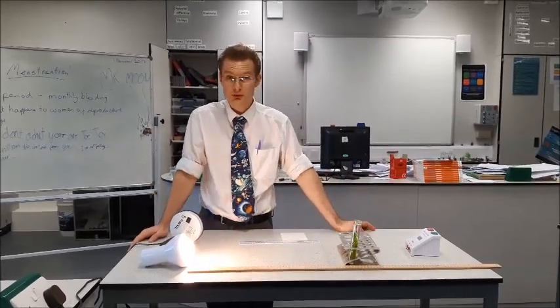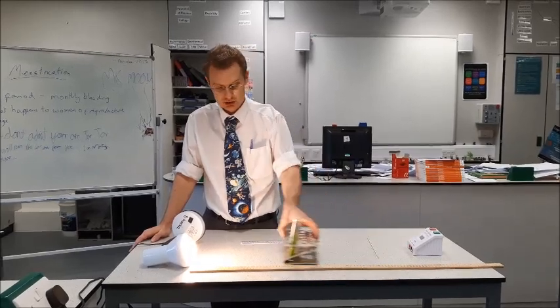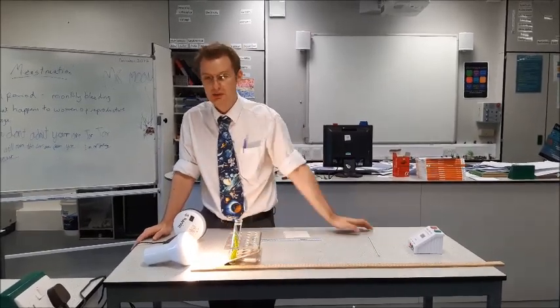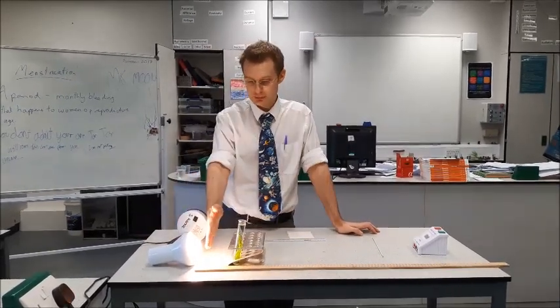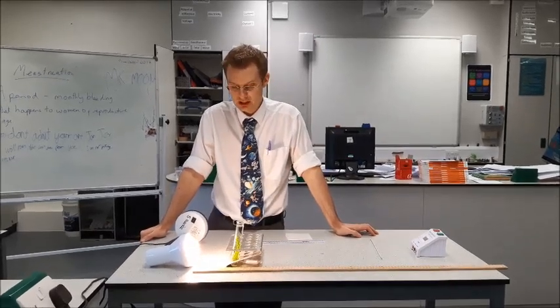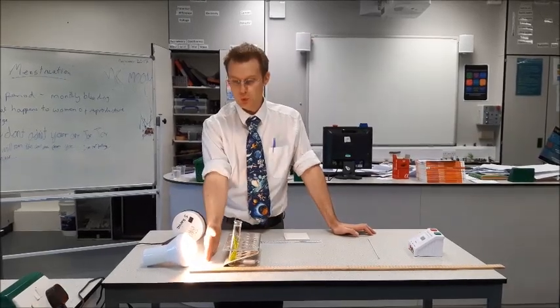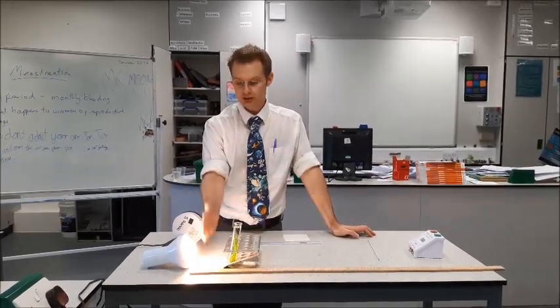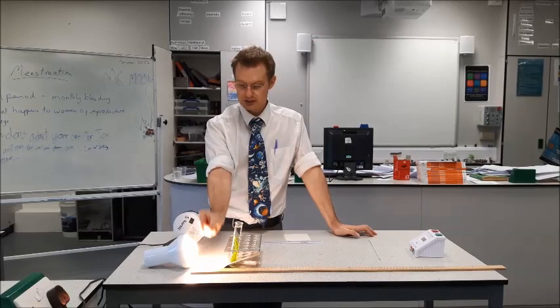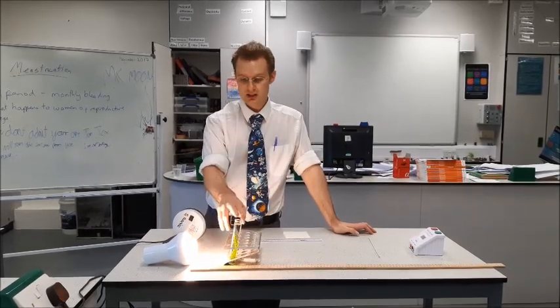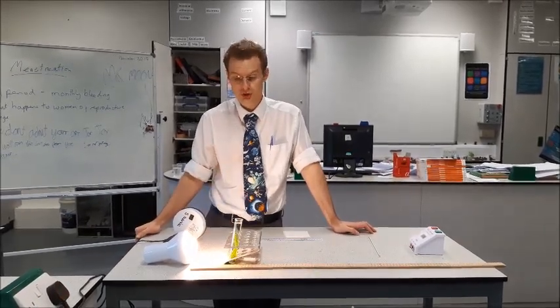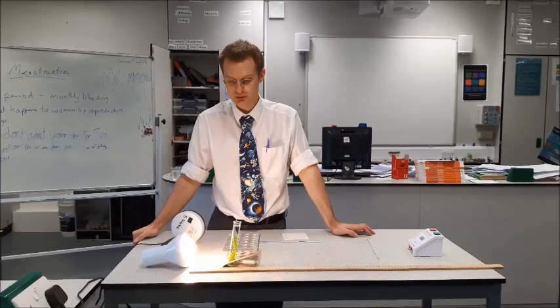Now one potential difficulty in this experiment is trying to keep the temperature the same. That should be another control variable. But a lot of these lamps will give off a lot of heat, and that could warm up your water. So potentially, to try and avoid that, you could have some kind of water barrier in the way, so that a thin glass tank of water would absorb a lot of that heat, meaning that your plant would not warm up and it would not impact your results.